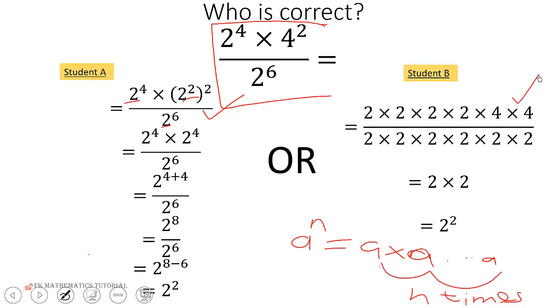Then the next step this one took was that he uses the law of indices: a exponent m as a exponent n is equal to a exponent m plus n to get this one simplified to 2 exponent 8.